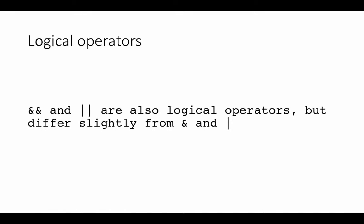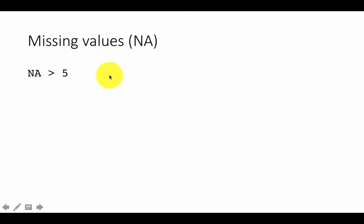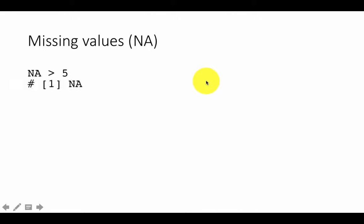While we are on the topic of logical operators, let's also look at how all of this works with missing values. We already know that missing values are represented with NA in R. So suppose you make a comparison like NA > 5 — is NA greater than 5? Given that NA is a missing value, we don't know, so the result is neither true nor false. It's unknown.